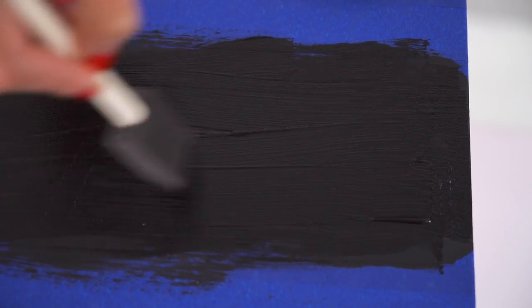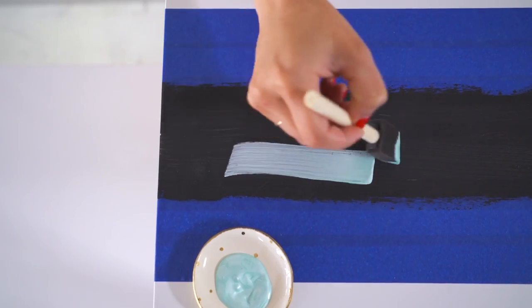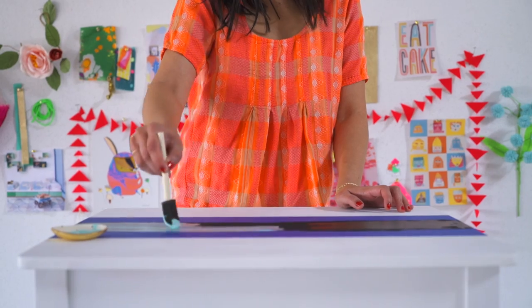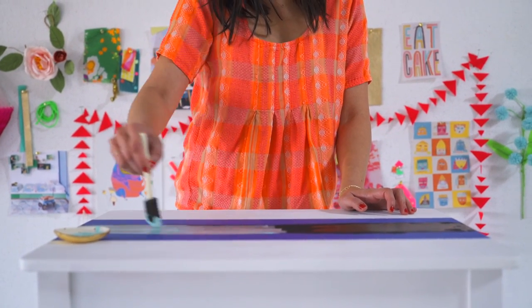Once the magnetic paint is dry, paint over it with the color of your choice in regular paint. That magnetic paint will still work under a coat of regular paint. Paint the remaining top of the table with chalkboard paint.